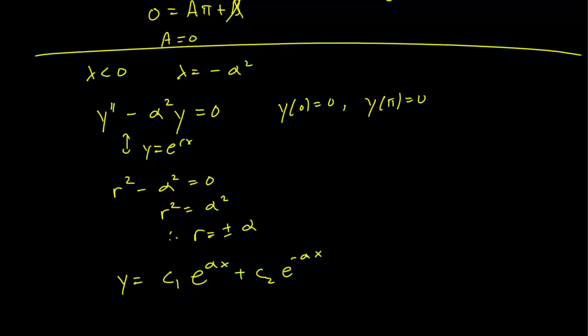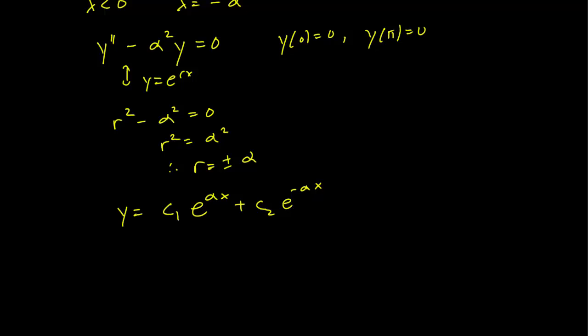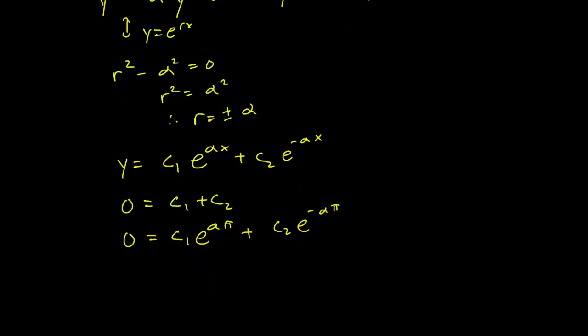Let's plug in our initial conditions, our endpoint conditions and see what happens. We have zero equals c₁ plus c₂ and also zero equals c₁e^(απ) plus c₂e^(-απ). So let's see what we can do about this. First, 0 equals c₁ plus c₂ implies that c₂ is just going to be negative c₁. So you can plug that in the second equation to get 0 equals c₁e^(απ) minus c₁e^(-απ).